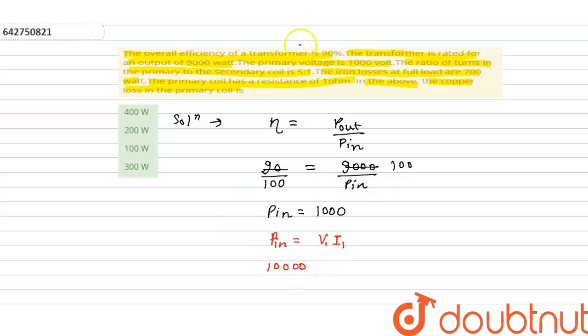10,000 equals V₁, which is 1000 volts, times I₁. P_input cancels out, and from here it's 10, so I₁ equals 10 amperes.